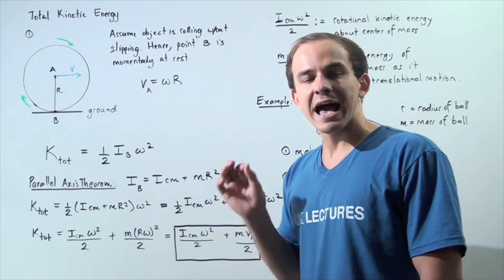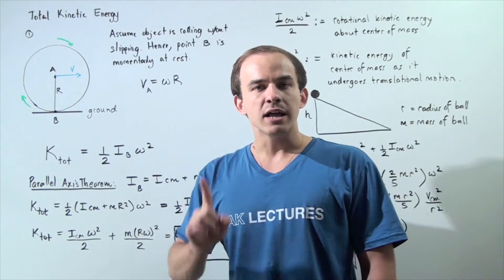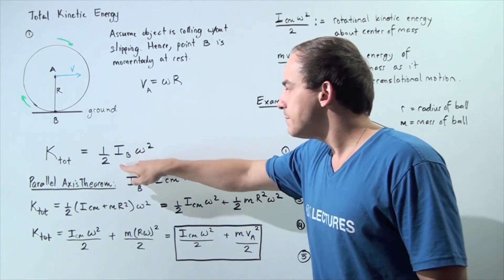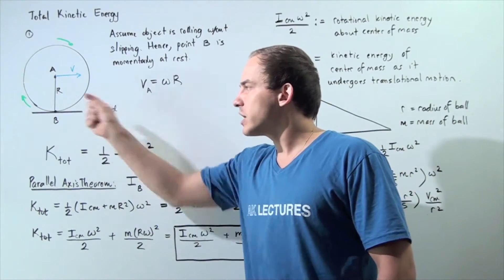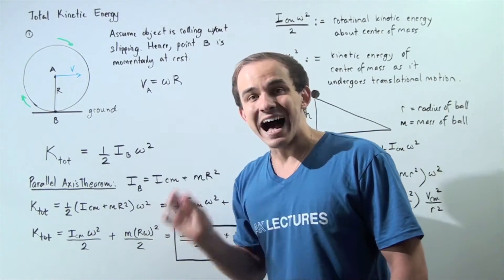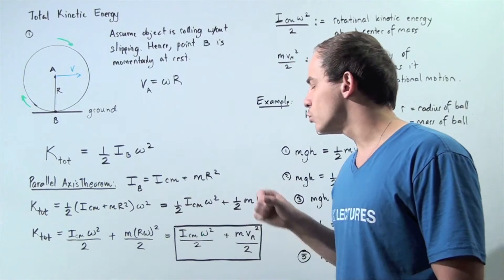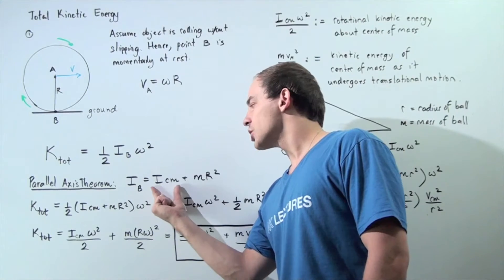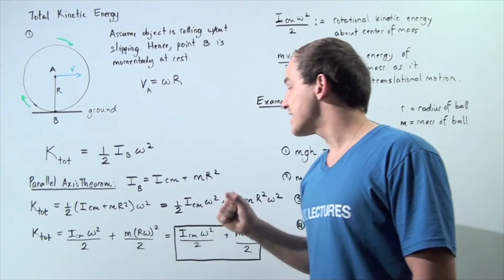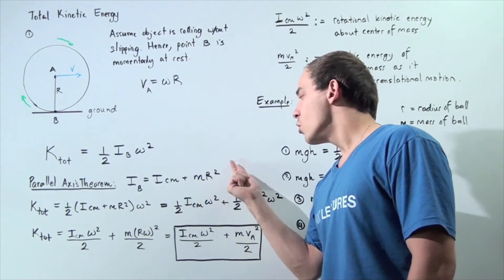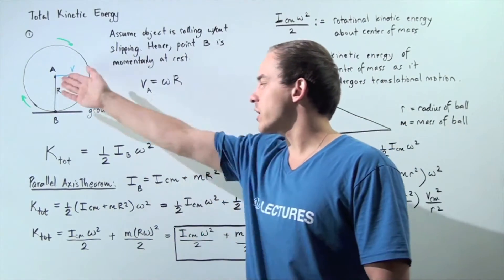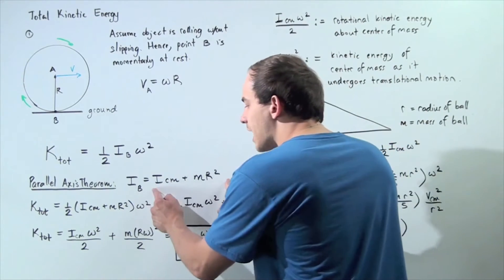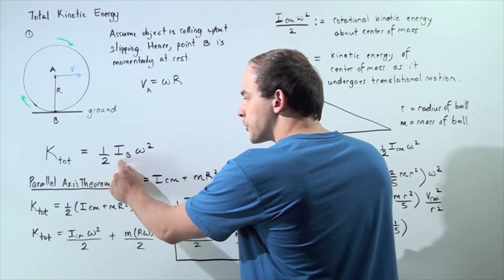Let's recall the parallel axis theorem. The parallel axis theorem states the following: I_B, the moment of inertia of the object about point B (which is not the center of mass), is equal to the moment of inertia about the center of mass plus mr squared, where m is the mass of our object and r is the radius of the wheel. Now let's take this equation and plug it into the kinetic energy term.